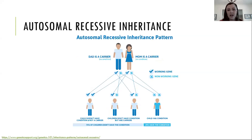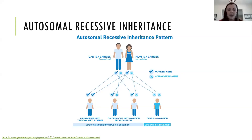With recessive conditions, we have mom and dad being unaffected with the condition, but they are both considered carriers. For these conditions, we need both copies of the gene to not be working properly. Mom and dad each have one working copy and one non-working copy, and each of them has a 50% chance to pass on either. When we combine that risk together, it gives us a 25% chance to have a child that's affected with the condition, a 50% chance to have a carrier child, and a 25% chance to have a child that's not affected and not a carrier. Carriers, when they go on to have their own children, could have an affected child themselves. Again, not a gender bias — males and females are equally at risk.